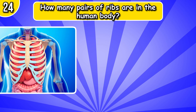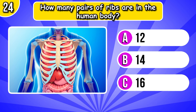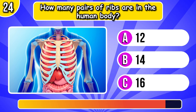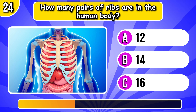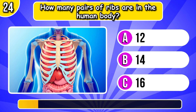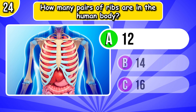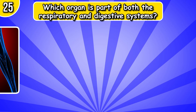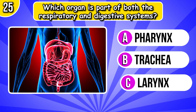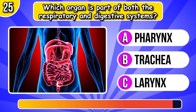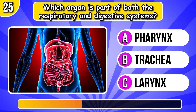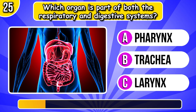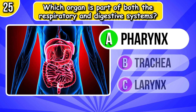How many pairs of ribs are in the human body? 12 pairs of ribs. Which organ is part of both the respiratory and digestive system? It's pharynx.